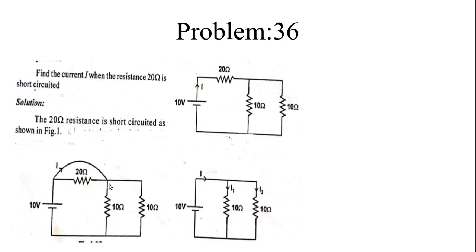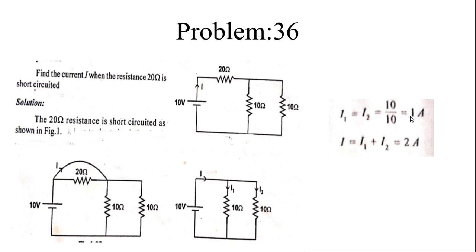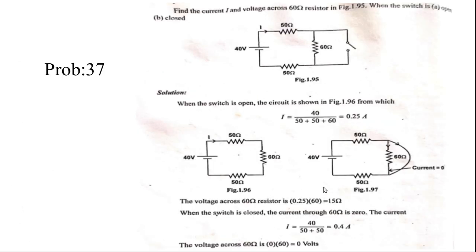Next problem: find the current I when the 20 ohm resistance is short circuited. The current separates into I1 and I2. R1 and R2 are connected in parallel, so the voltage across the 10 ohm resistor is 10 volts, and the voltage drop across the other 10 ohm is also 10 volts. I1 = V/R = 10/10 = 1 ampere, and I2 = 10/10 = 1 ampere. The total current I = I1 + I2 = 2 amperes.